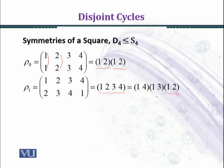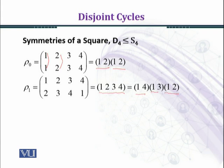We write ρ₁ as (1 4)(1 3)(1 2) from right to left, and computing this product gives the cycle (1 2 3 4). Here we have 3 transpositions, so this permutation is an odd permutation. For ρ₀, we had a product of 2 transpositions, so ρ₀ is an even permutation.